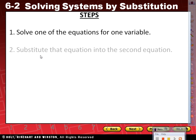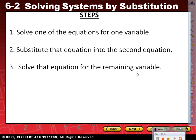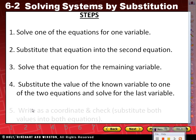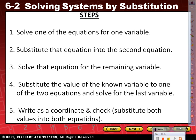Step two: substitute that equation into the second equation. Once we solve that equation for one variable, we substitute it into the second. Step three: solve that equation for the remaining variable. Step four: substitute that value into one of the two equations and solve for the last variable. Step five: write as a coordinate and check.